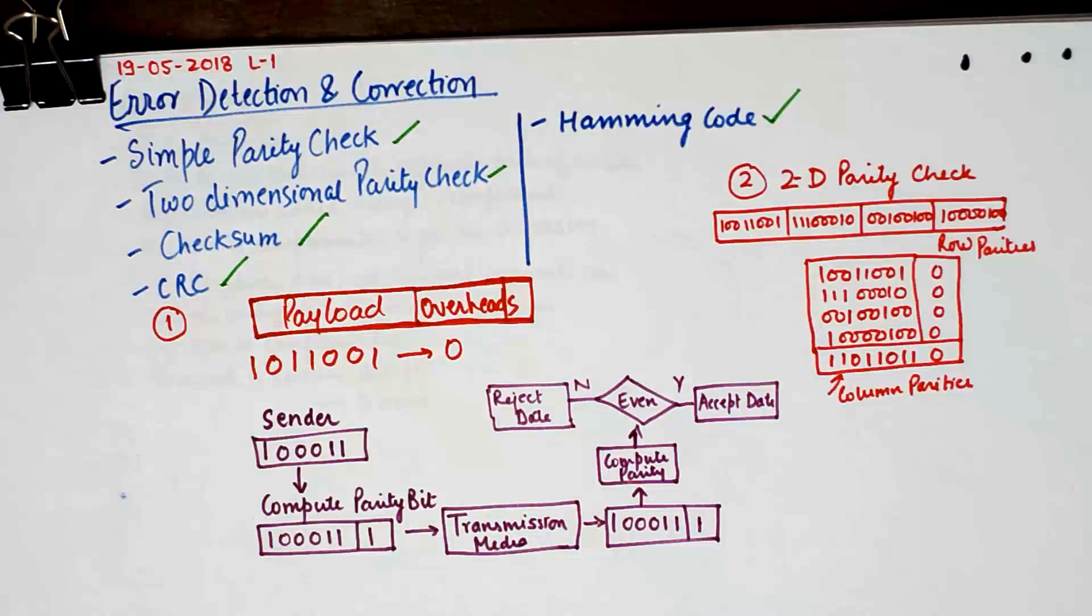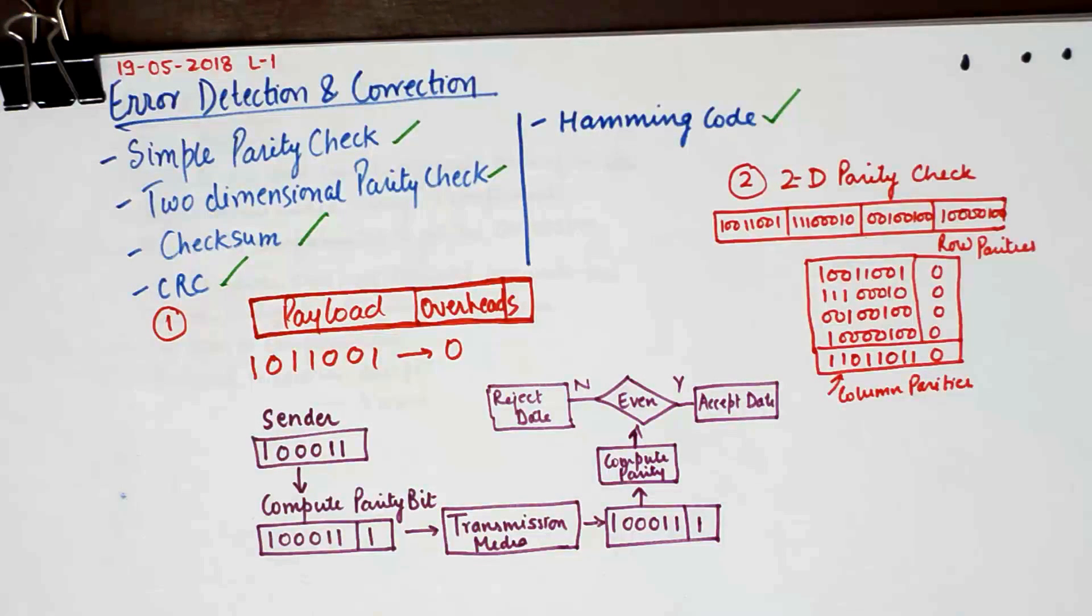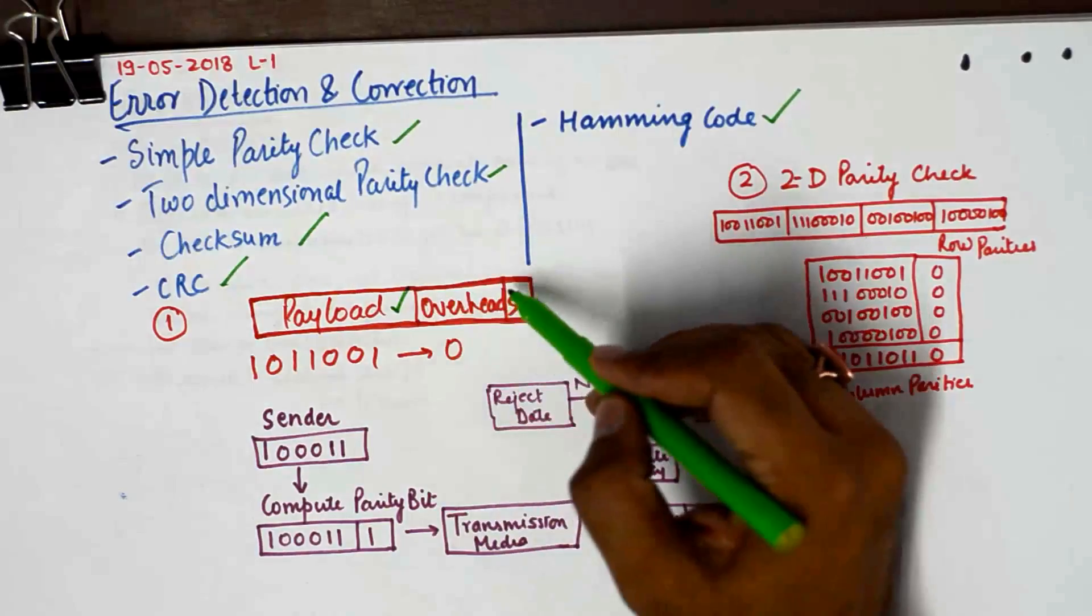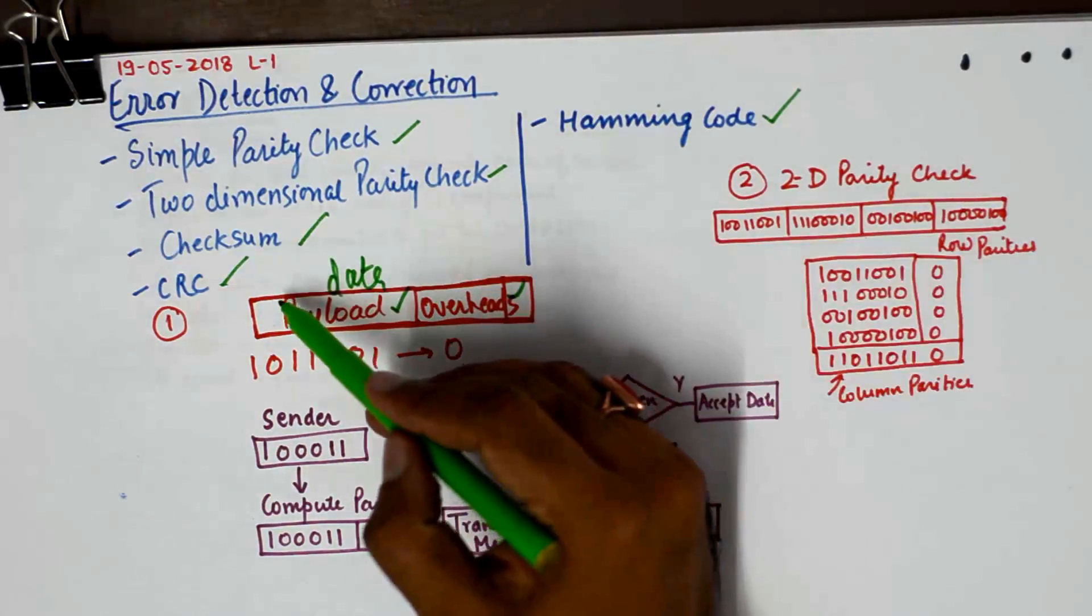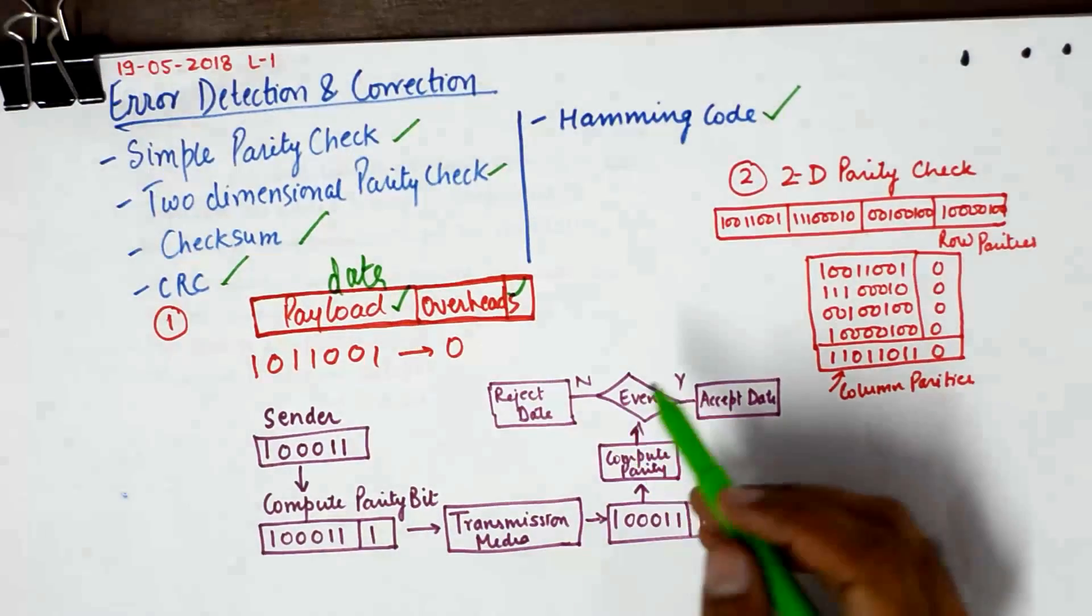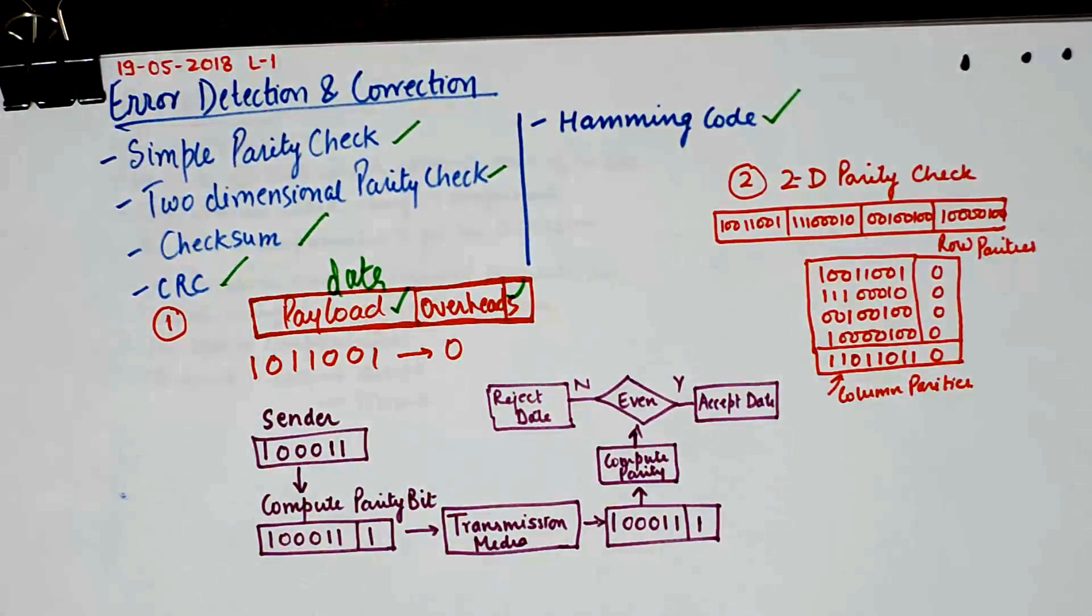Let's discuss what a payload and overhead is. Now please understand, the data that we want to send, this is the data that we want to send to the receiver, which is known as payload. Now because we want to detect errors at the receiver, we'll need to send some additional information that will help us find the error at the receiver, and that additional information is known as overhead.